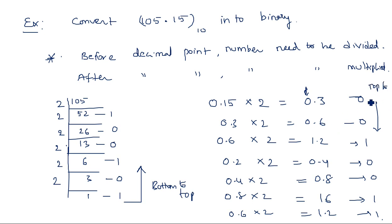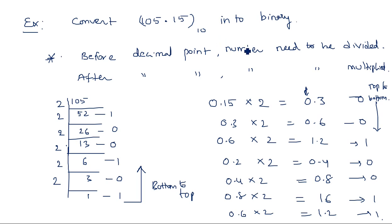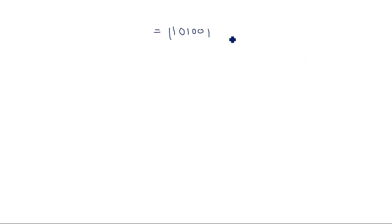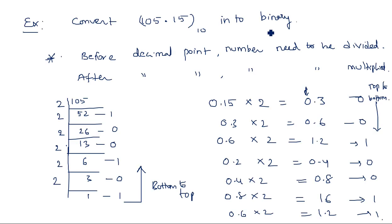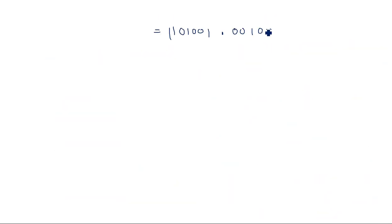So the final result: the integer part 105 gives 1101001 in binary, and the fractional part 0.15 gives approximately 0.0010011 in binary. Therefore 105.15 in decimal equals 1101001.0010011 in binary.